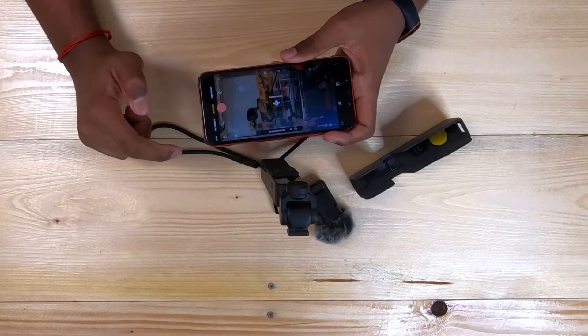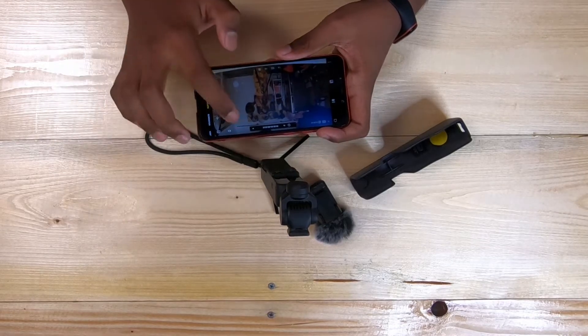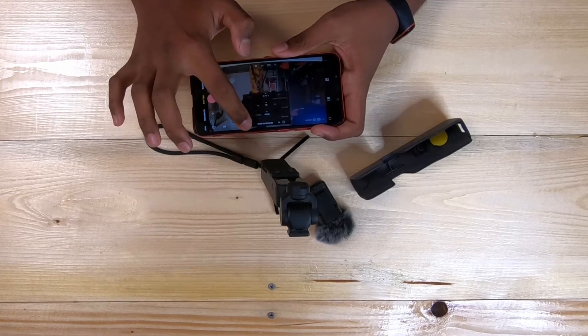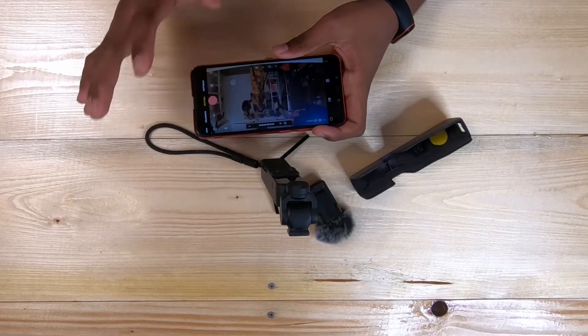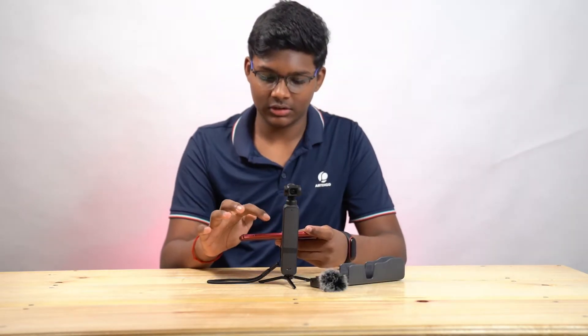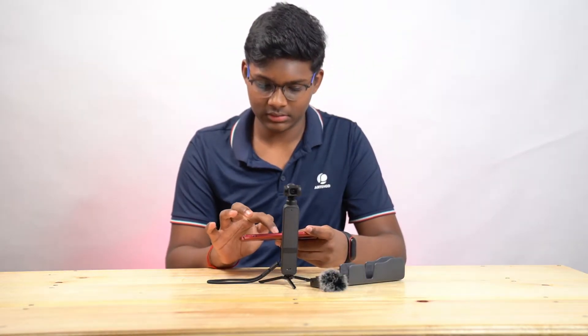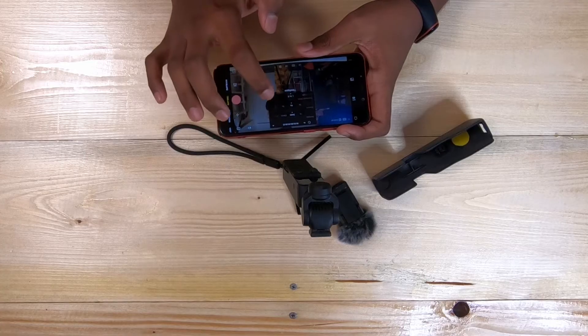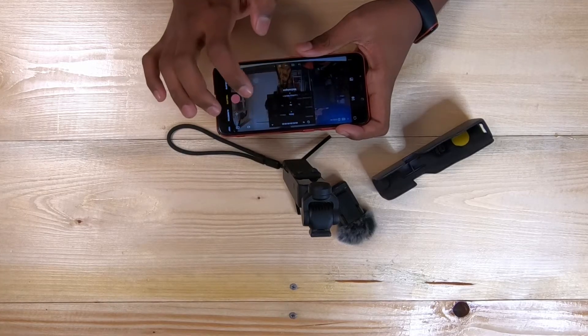And then we have time lapse. So, in this time lapse, you can actually choose the direction. In case you want to check a sunset or sunrise. You just want to set the light from left to right. Fixed angle, left to right. And then custom motion.